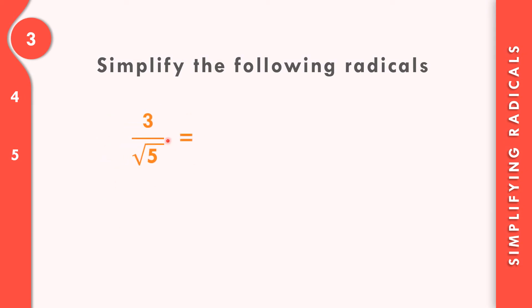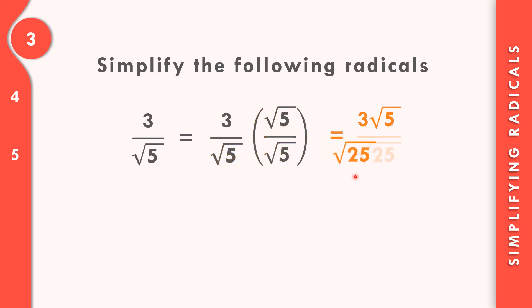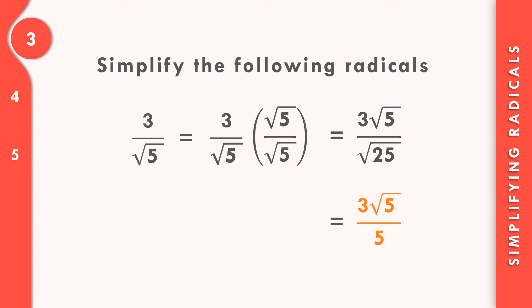Let us solve number 3: 3 over square root of 5. We need to copy the expression, then multiply the numerator and denominator by the denominator, which is square root of 5. So 3 times 1 equals 3, and copy square root of 5. Square root of 5 times square root of 5 gives square root of 25, which equals 5. So the final answer is 3 square root of 5 over 5.